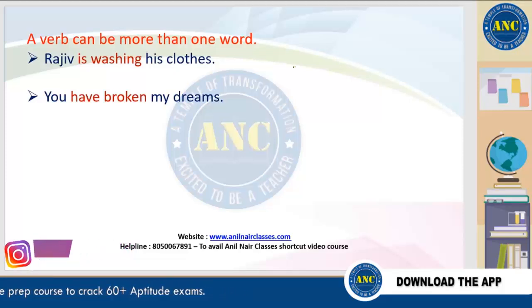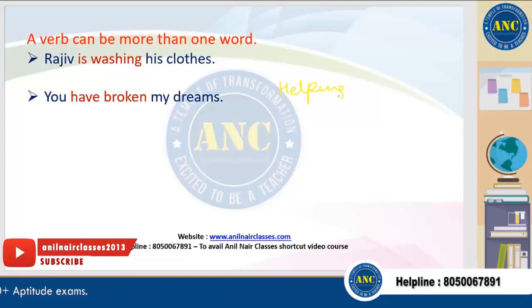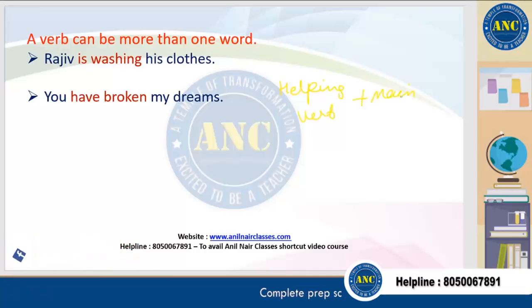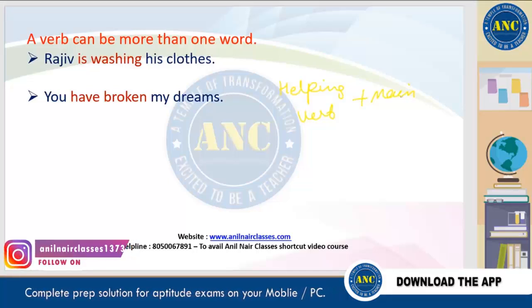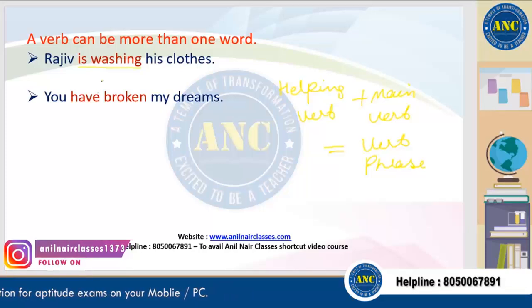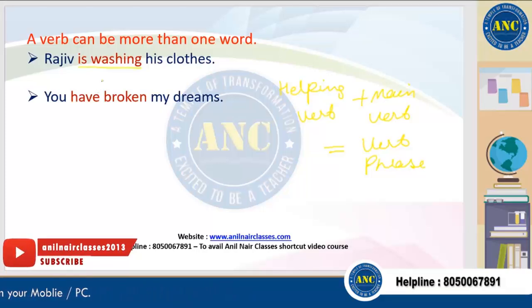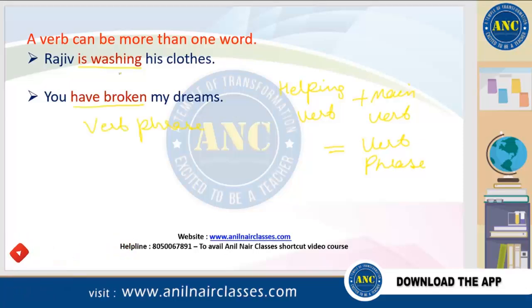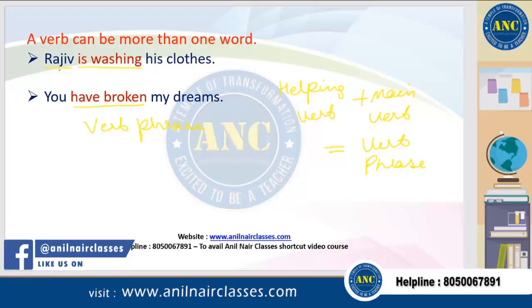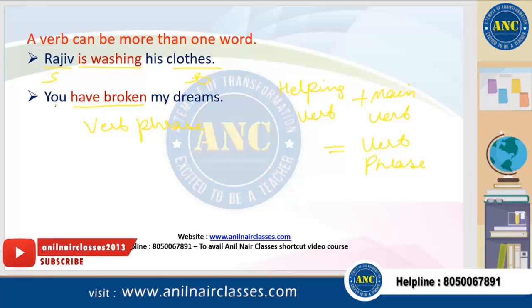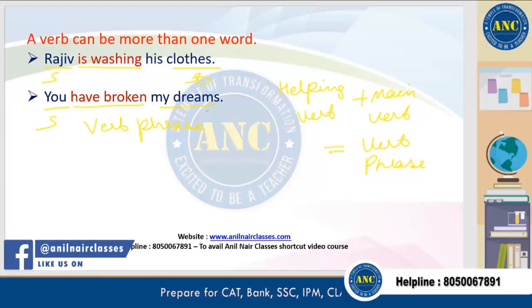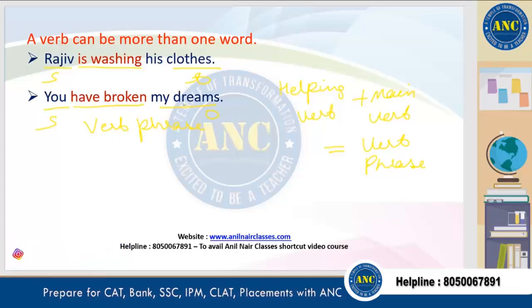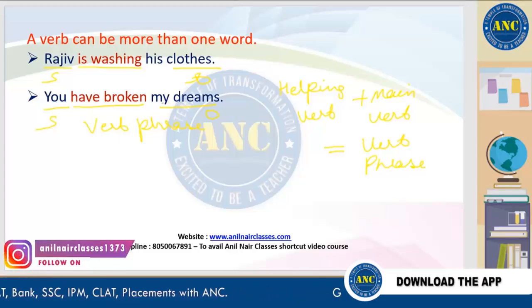The verb can also be more than one word. When we have a helping verb plus a main verb — the action verb — together it is called a verb phrase. 'Is washing' is a verb phrase. 'Have broken' is a verb phrase. Subject-verb agreement we always have to look for. Who is washing his clothes? Rajiv — Rajiv is the subject. You have broken what? My dreams — that is the object.